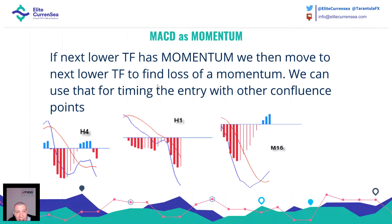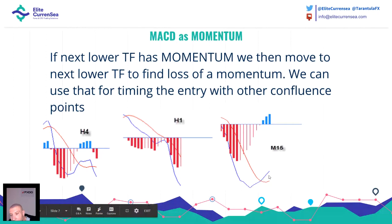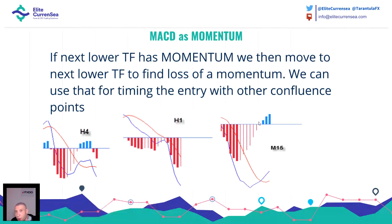Let's say that on the four-hour timeframe we have a thick red histogram. It means that the four-hour timeframe has both trend and momentum. If you go to the one-hour timeframe and see that the one-hour histogram is weakening, we say that the one-hour timeframe is losing momentum, but we still have a downtrend - meaning a retracement is coming. We can actually time the retracement on the 15-minute timeframe. So: four-hour thick, one-hour thinning, 15-minute going up - you can find entries in the downtrend on the 15-minute timeframe.